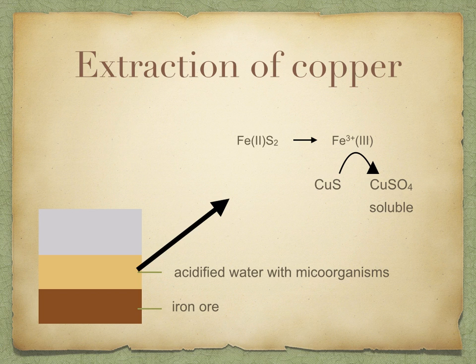During this process, sulfuric acid is produced and the pH may fall as low as pH 2. The bacteria Thiobacillus ferrooxidans is able to tolerate this level of acidity.